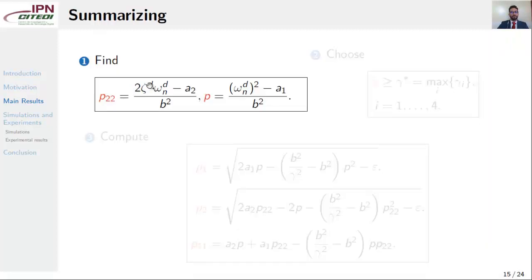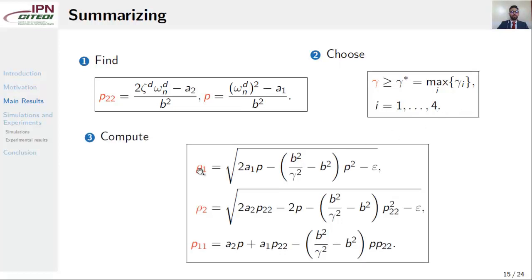To summarize, find p22 and p, as shown here, and you will get the desired settling time and the desired percent overshoot. Choose gamma greater than the four values that we shown. Finally, compute rho1, rho2, and p11. And the design is complete.